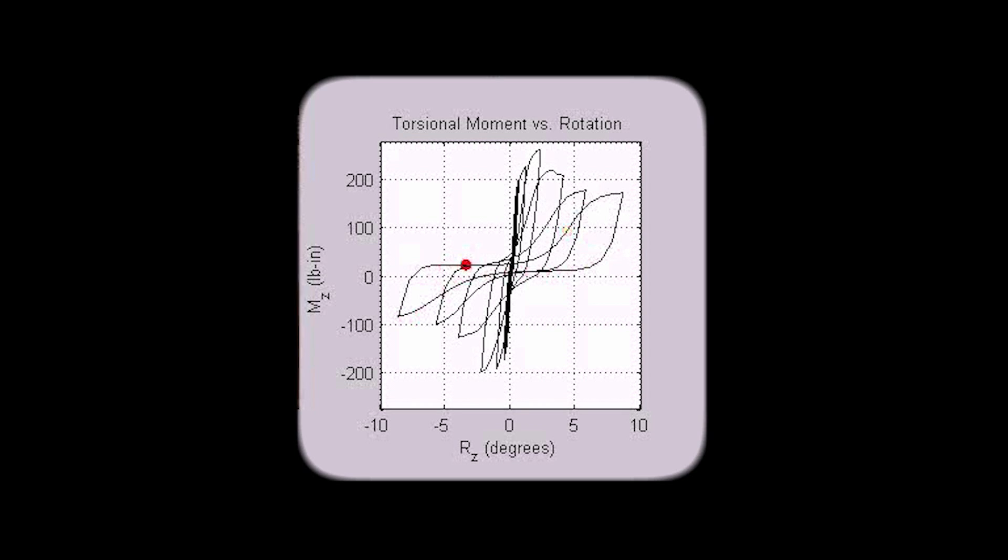This indicates the pier is no longer capable of achieving the same strength at a specific level of rotation as it did when the rotation was being increased.